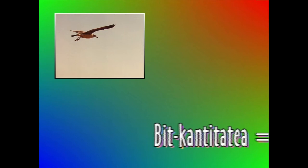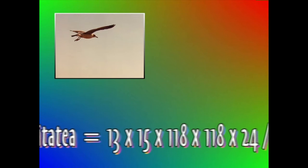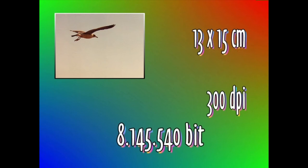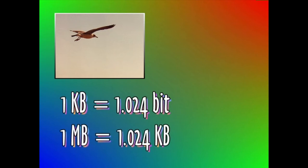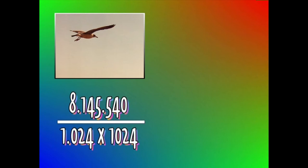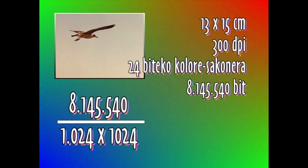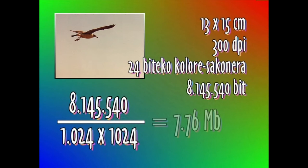Bit kantitatea berdin hamairu bider hamabost, bider hemezortzi koma hamaika, bider hemezortzi koma hamaika, bider hogeita lau, zati zortzi. Eragiketaren emaitza zortzi milioi, hemezortzi eta berrogeita bost mila, bostehun eta berrogei bit da. Kilobit batek mila eta hogeita lau bit daukanez, eta megabit batek mila eta hogeita lau kilobit, goian lortutako emaitza mila eta hogeita lau zatitan bi aldiz zatitzen badugu, azbeteko irureun puntuko bereizmenaz eta hogeita lau biteko kolore sakoneraz eskaner baten bitartez atzemandako hamairu bider hamabost zentimetroko argazki batek zazpi irurogeita hamasei megabiteko fitxategia beharko duela ordenagailuan ikusiko dugu.